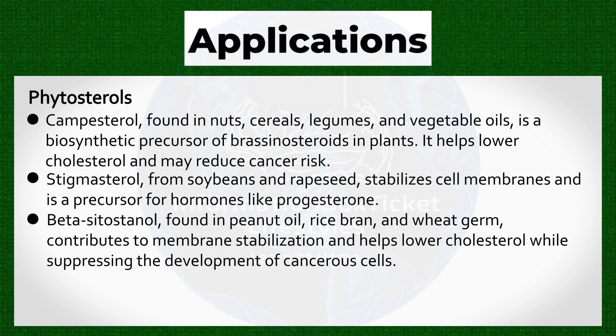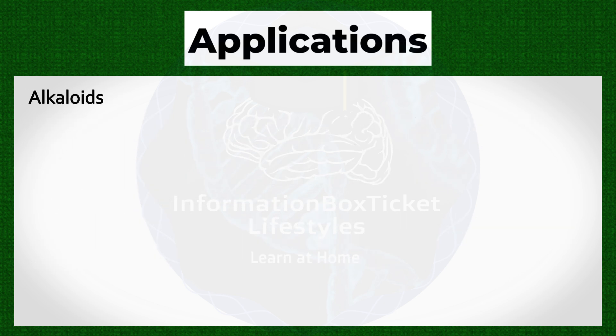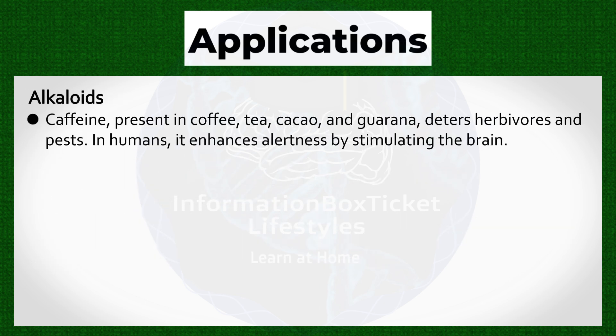Beta-sitostanol, found in peanut oil, rice bran, and wheat germ, contributes to membrane stabilization and helps lower cholesterol while suppressing the development of cancerous cells. Alkaloids applications: Caffeine, present in coffee, tea, cacao, and guarana, deters herbivores and pests.